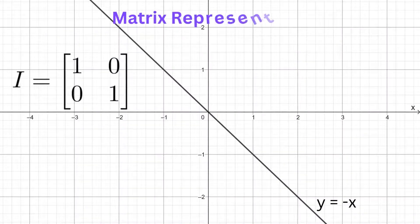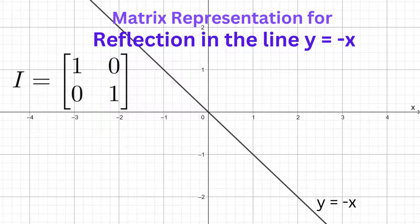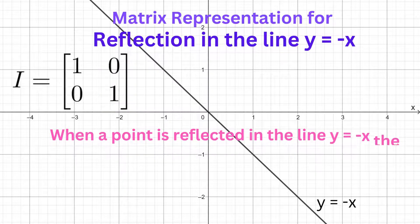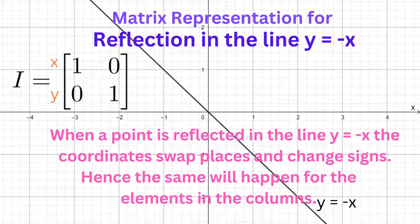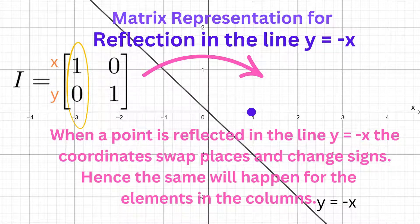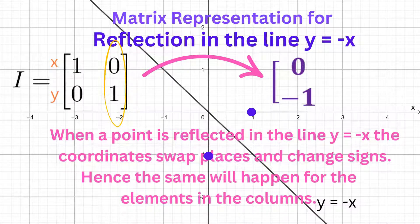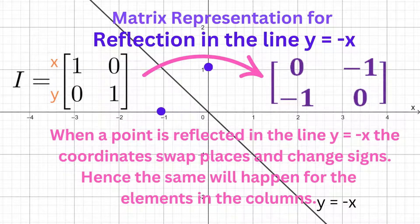In deriving the transformation matrix for a reflection in the line y = -x, we recall that when a point is reflected in the line y = -x, the coordinates swap positions and change signs. So (1, 0) becomes (0, -1), therefore the first column in the transformation matrix will be (0, -1). The second column represents the point (0, 1). They will switch places and change signs to become (-1, 0), so the second column in the transformation matrix is (-1, 0).